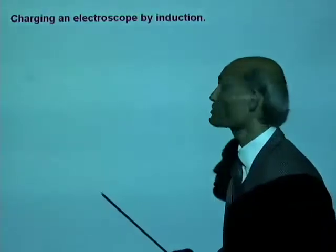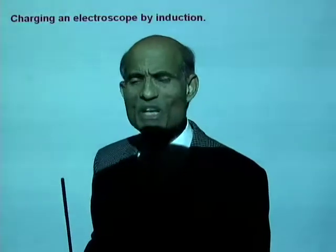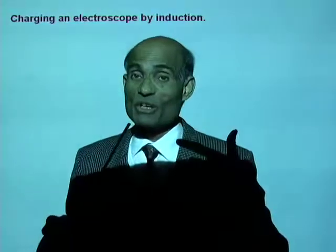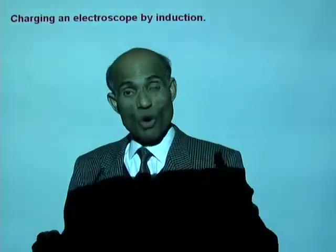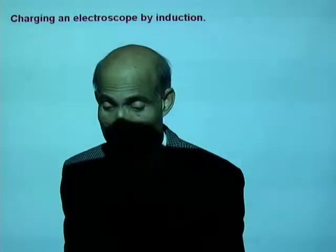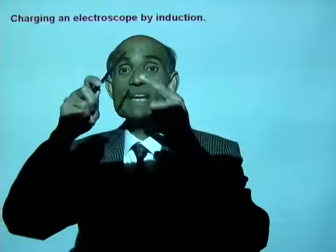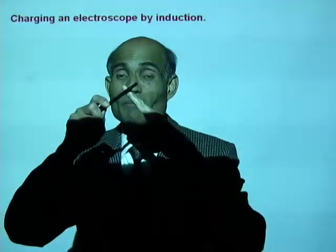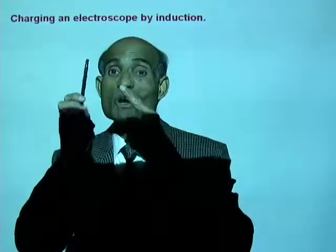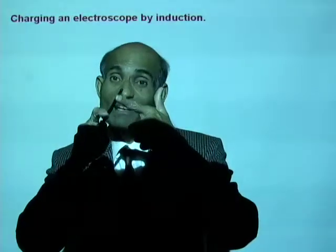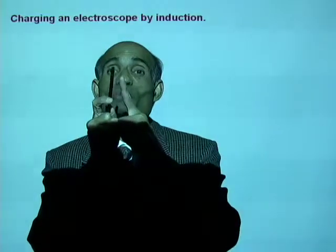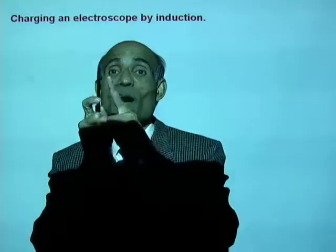How do we charge an electroscope by induction? What is the meaning of induction? In charging an object by conduction, we placed the charged object in contact with the neutral conductor. In charging an object by induction, you do not make the charged object in contact with the neutral conductor — you bring it near the neutral conductor without making contact.